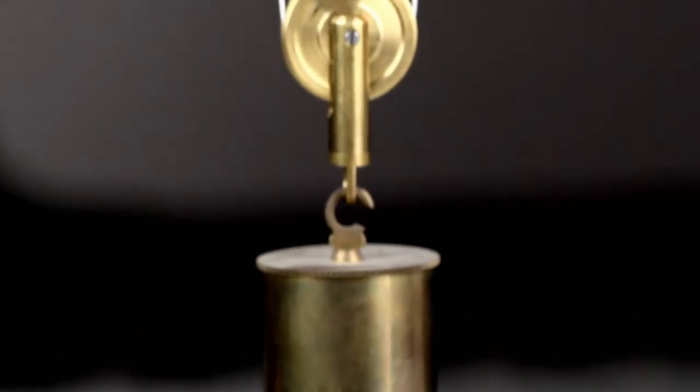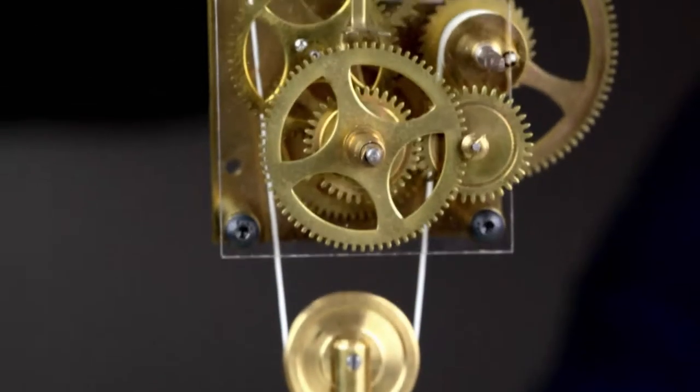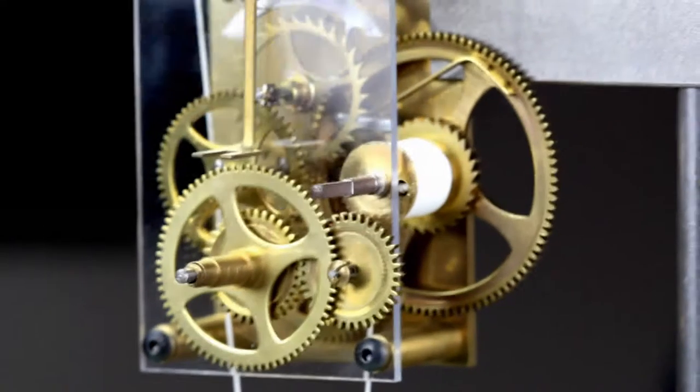When the movement is weight driven, the weight hangs from a cord or cable wound around a drum on the winding arbor.